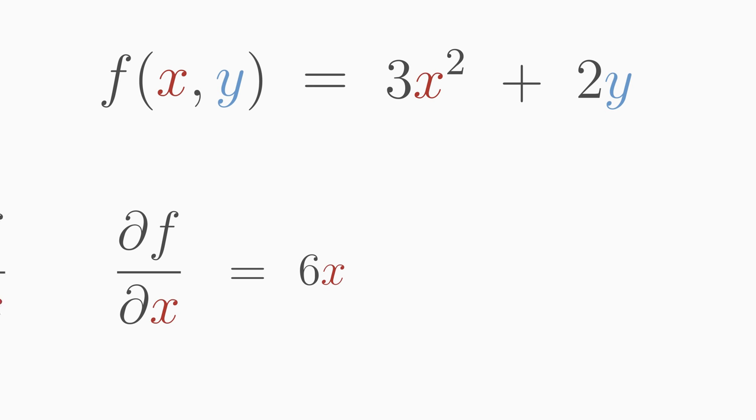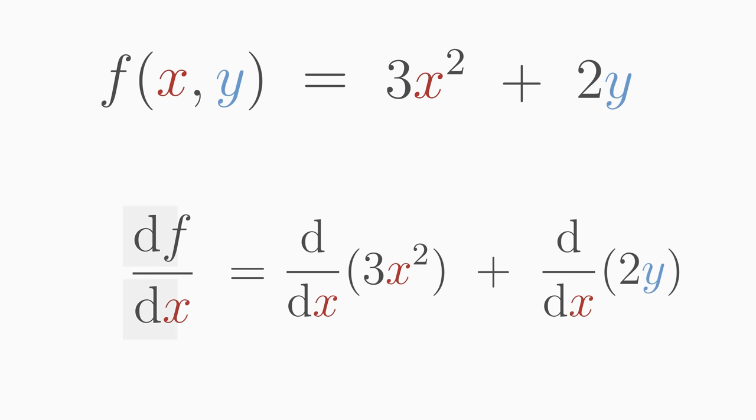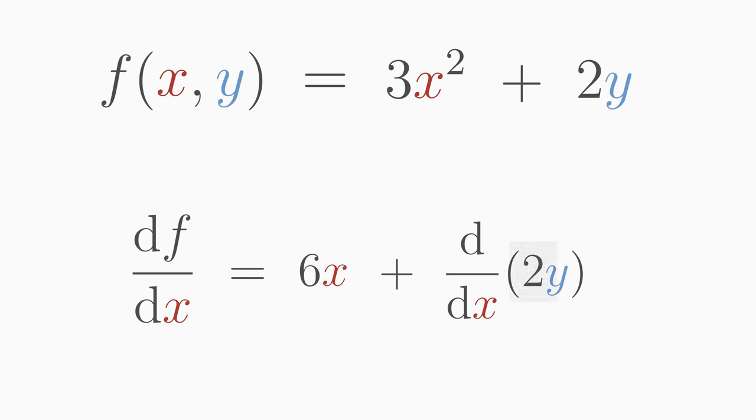Let's now calculate the total derivative of the function. The curve del changes to a d. The total derivative of 3x squared is 6x, and the total derivative of 2y is no longer 0, because y can depend on x. We can write the factor 2 in front of the derivative.